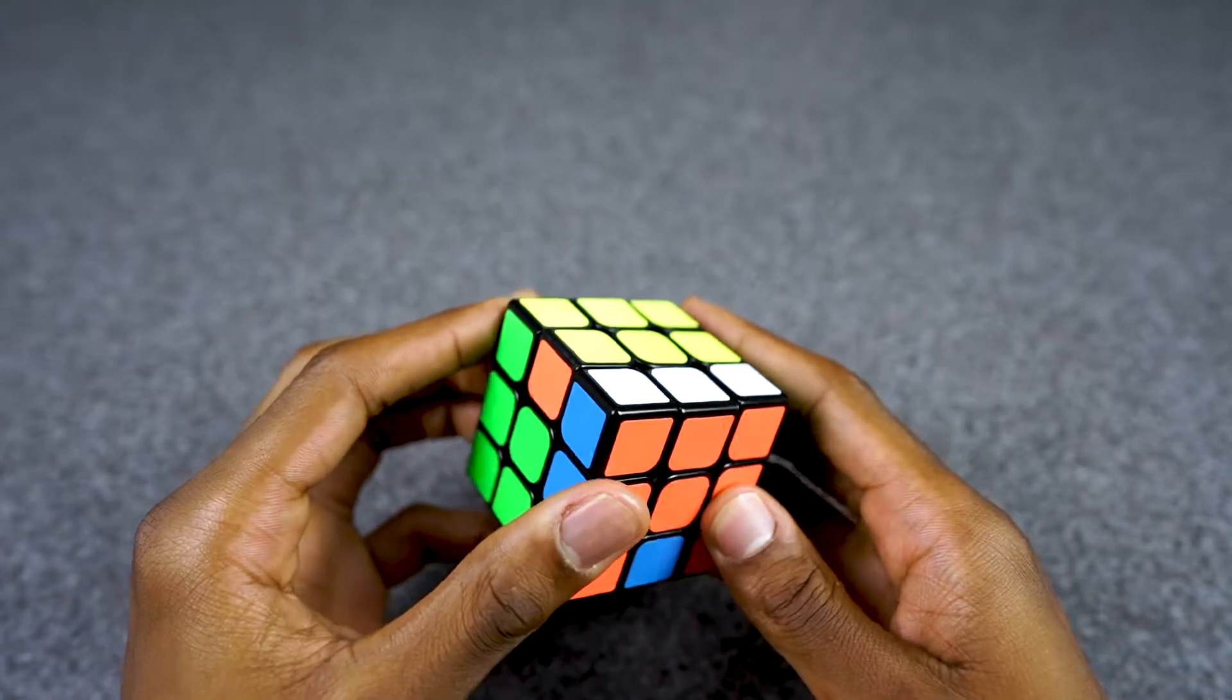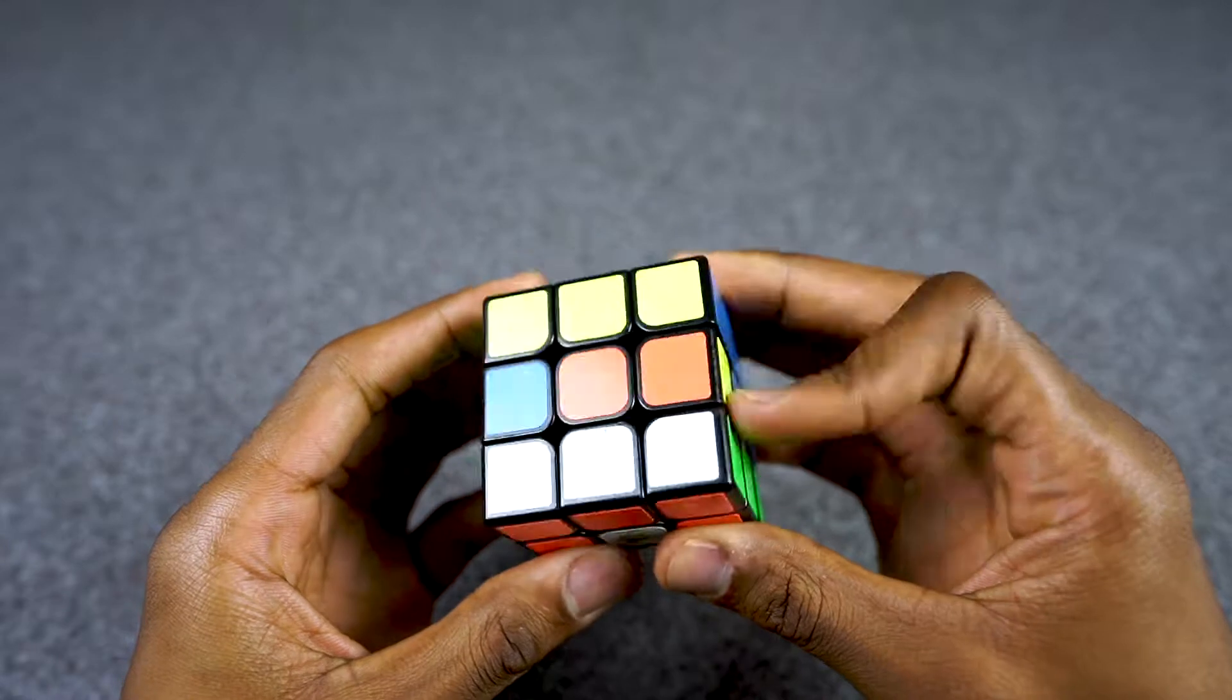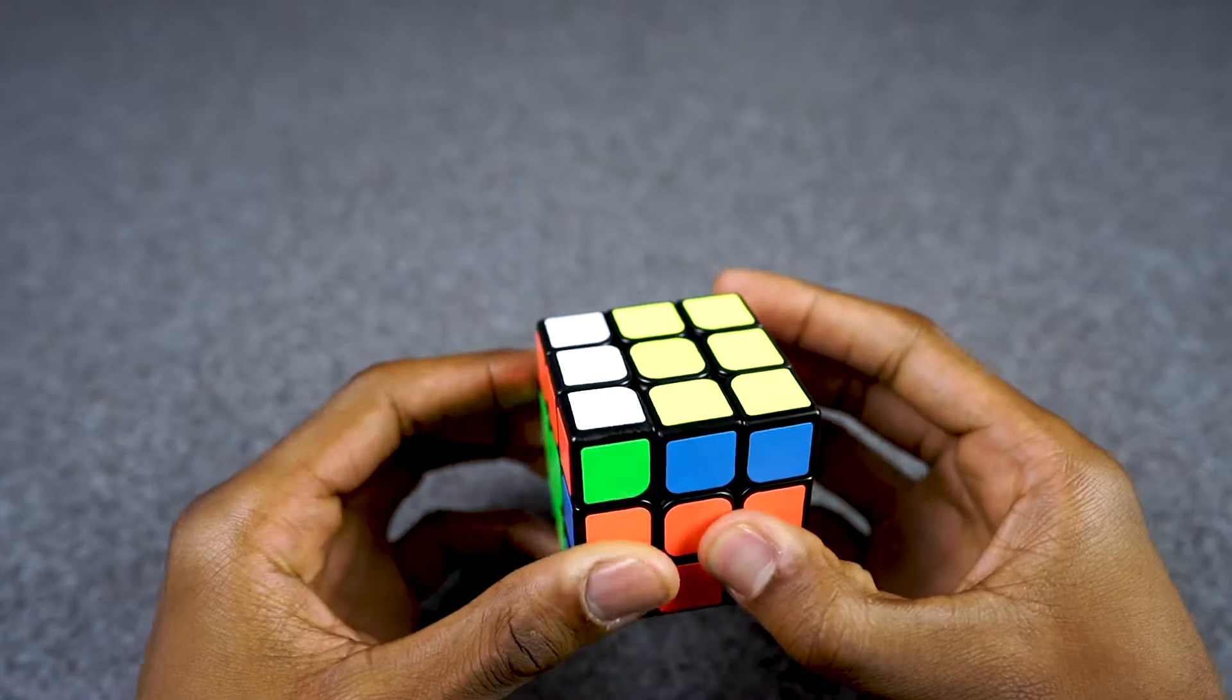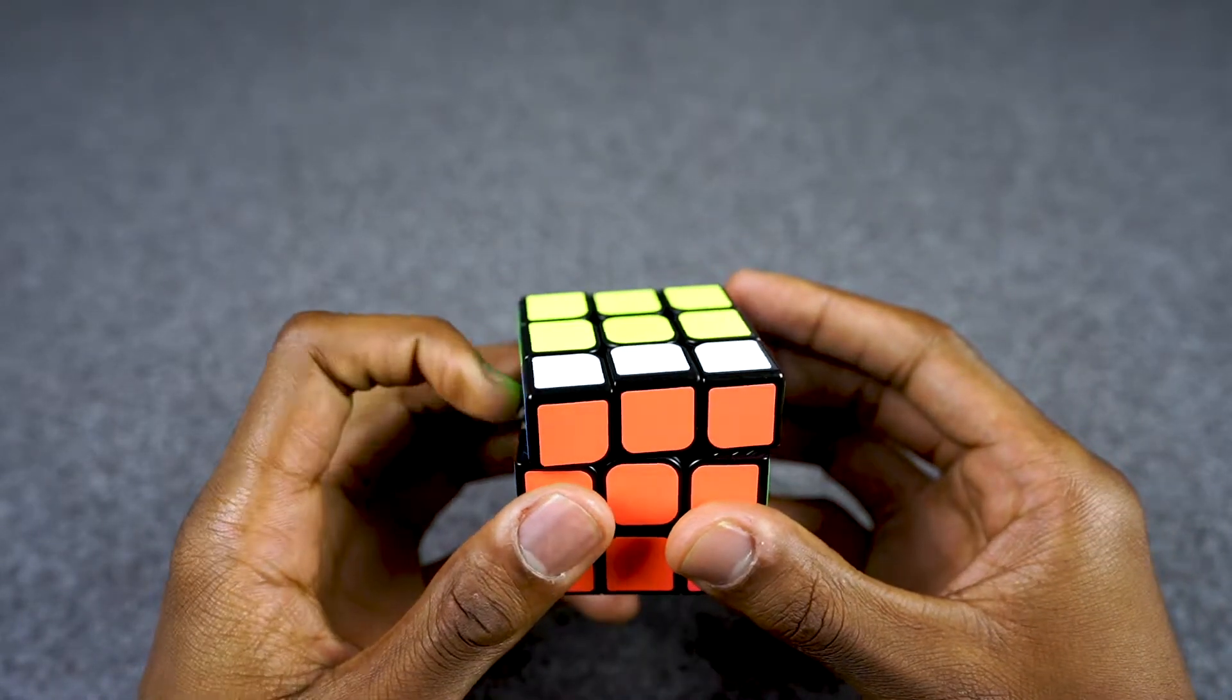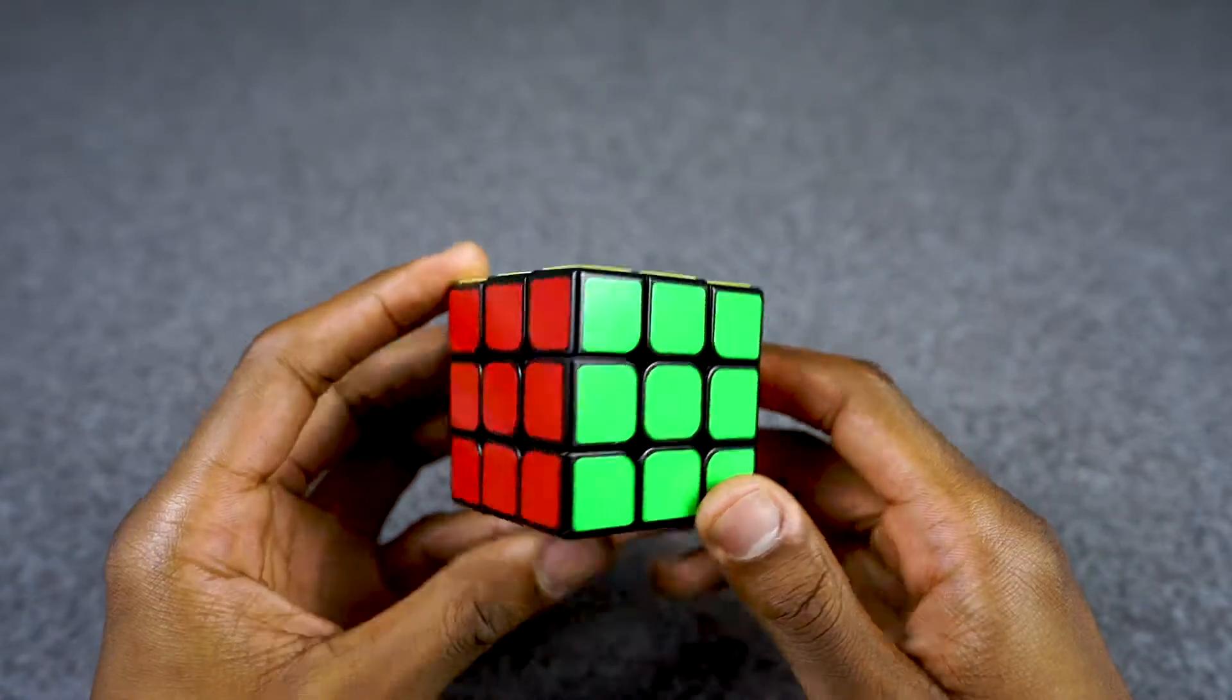We can do that quickly with an F2. Is it going to be a U or U prime? It's going to be U prime. So U prime, R prime, L, F2, R, L prime, U prime, F2, and we're done with the cube.